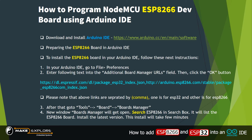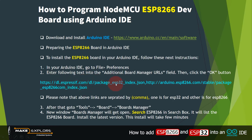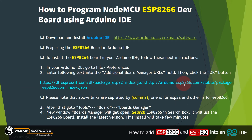Now we have downloaded and installed Arduino IDE. Let's prepare the ESP8266 board in Arduino IDE. To install the ESP8266 board, go to File > Preferences and enter the following text into the Additional Board Manager URLs field, then click OK. Please note that there are two links separated by a comma — one is for ESP32 and the second one is for ESP8266.